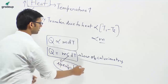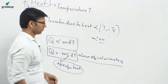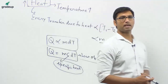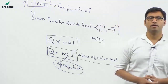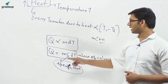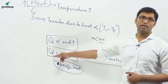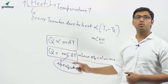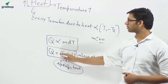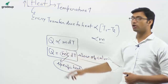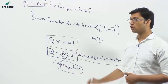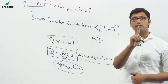What is specific heat? The definition of specific heat is that it is the amount of heat required to increase the temperature of unit mass — where m equals 1 — of a substance through 1 degree Celsius.